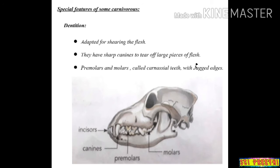Now we will see the special features of carnivorous animals, starting with dentition. The dentition in carnivorous animals is adapted for tearing the flesh of other animals. They have sharp and pointed canines to tear large pieces of flesh. In the picture, you can clearly see the canine teeth — they are very sharp and pointed. The premolars and molars are called carnassial teeth with jagged edges, meaning sharp and uneven edges. These teeth are well suited to slice the flesh of prey. The incisor teeth are present at the front of the mouth.